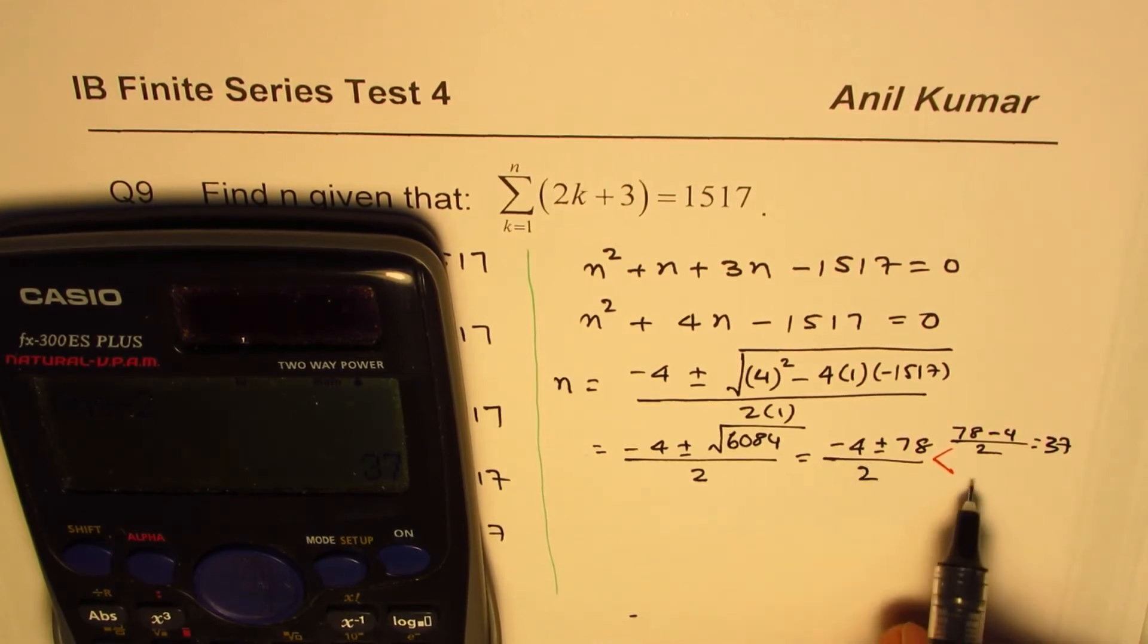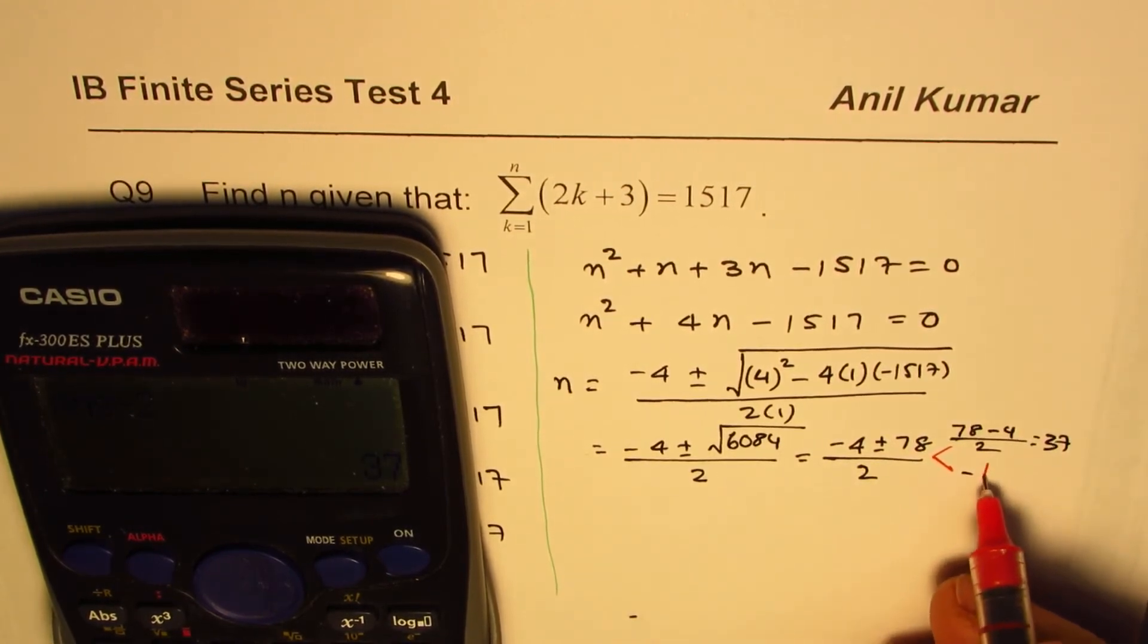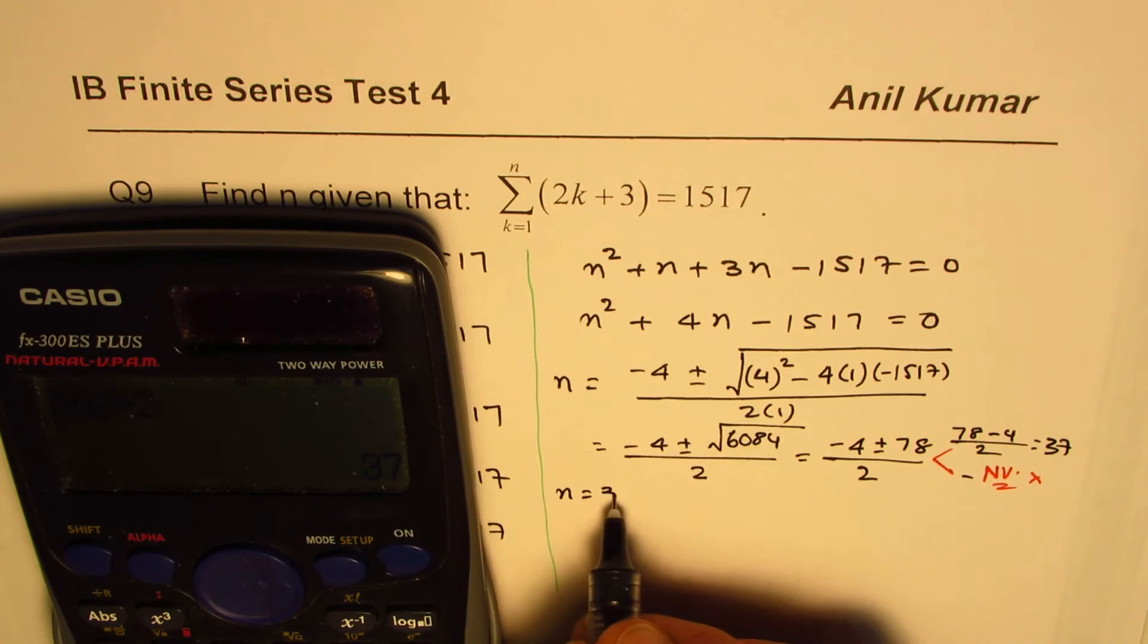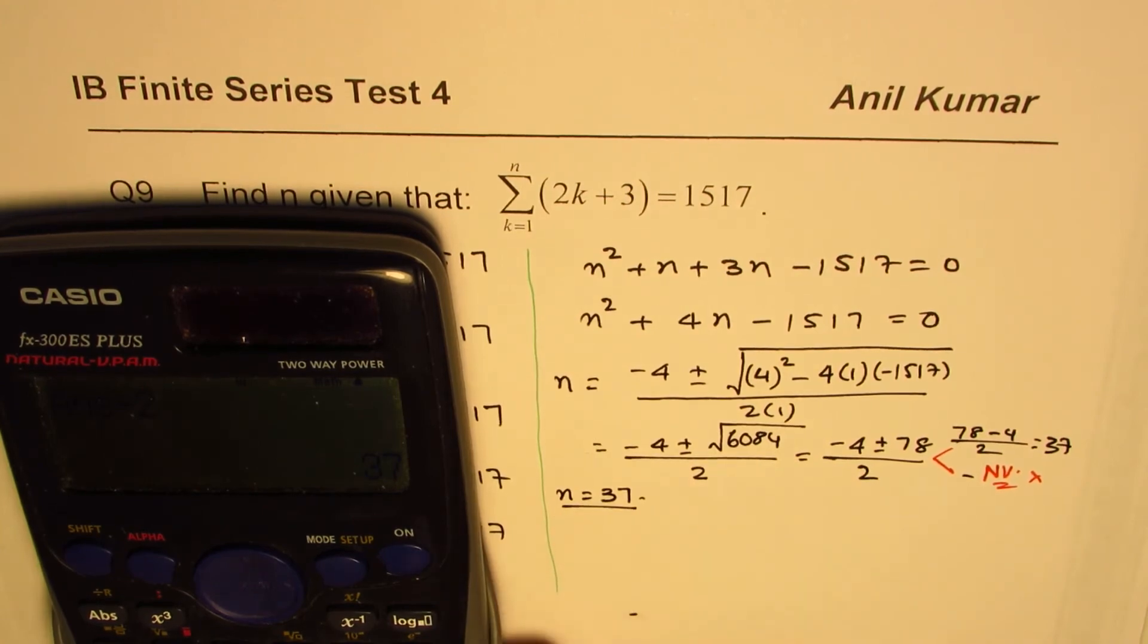So 78 minus 4 equals 2 divided by 2 equals to 37. So this is equal to 37. This is valid. The other one is the negative answer, we'll say not valid. So not valid answer. So we ignore it.